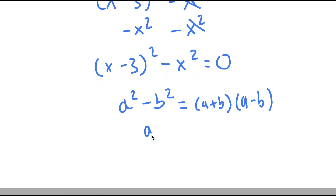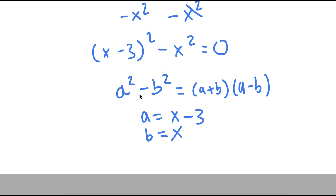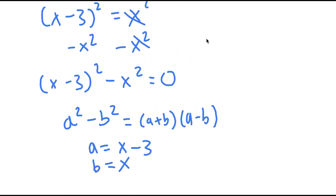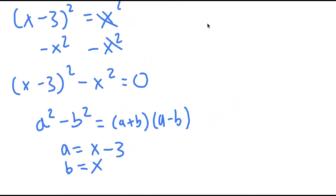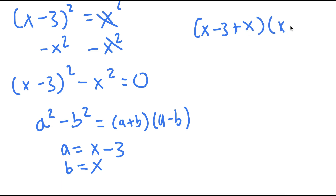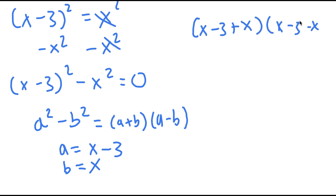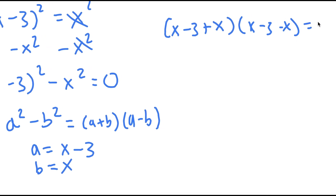So in this case, a is x minus 3 and b is x. So I have x minus 3 plus x, times x minus 3 minus x, and this is equal to 0.